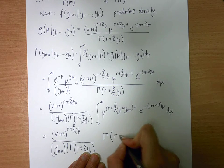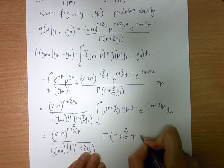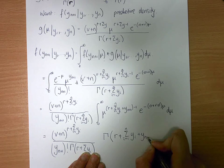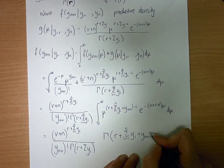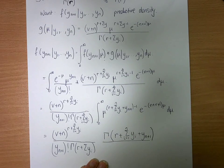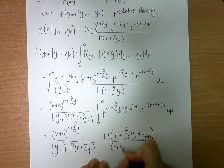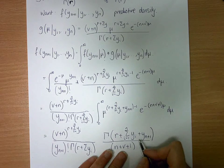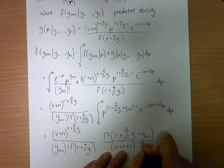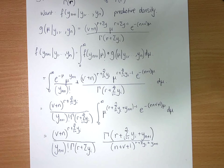So we say it's v plus n to the power of r plus the sum from i equals 1 to n of y_i, over y_{n+1} factorial times the gamma function of r plus the sum of y_i. The integral evaluates to the gamma function of r plus the sum from i equals 1 to n of y_i plus y_{n+1}, divided by n plus v plus 1 to the power of r plus the sum of y_i plus y_{n+1}. And that's the integration done.